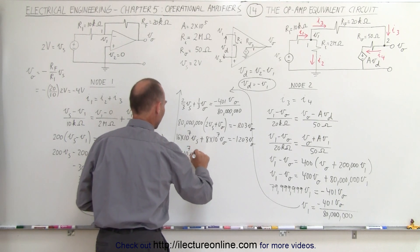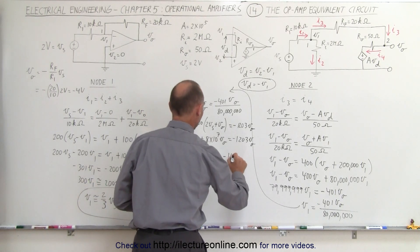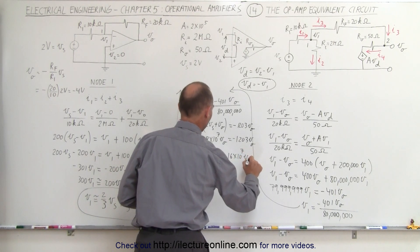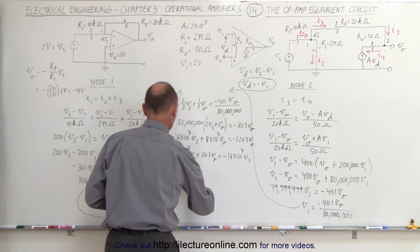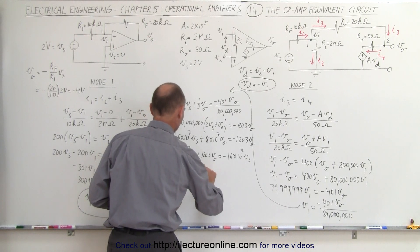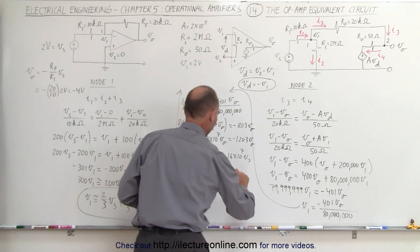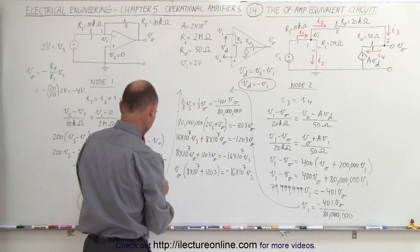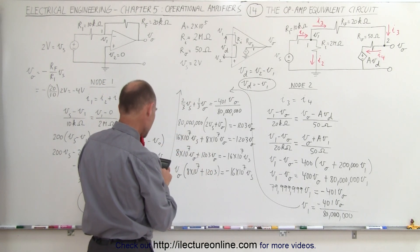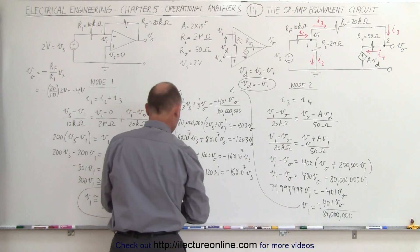Factoring: (8×10^7 + 1203)·V_O equals minus 16×10^7·V_S. Using a calculator: 16×10^7 divided by (8×10^7 + 1203) gives approximately 1.99997. So V_O equals minus 1.99997 times V_S.